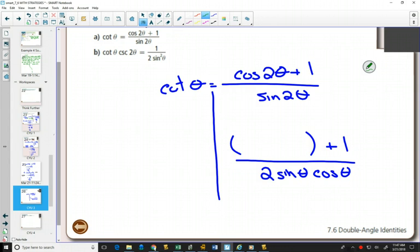In the meantime, while you're thinking about that, I'm going to take my left hand side and change this to sine and cosine, so cotangent is cos θ over sin θ. Any suggestions which of the three do you like the best and why?